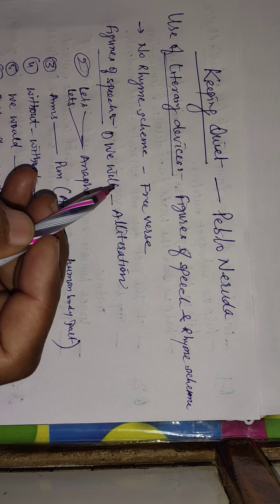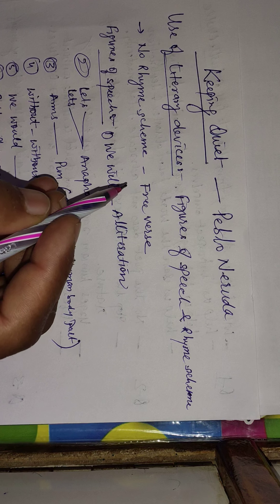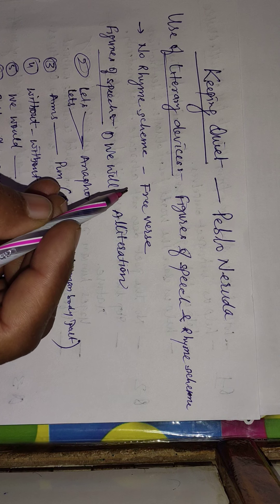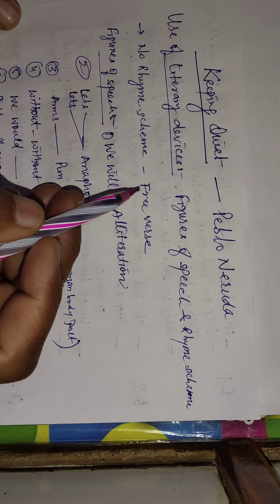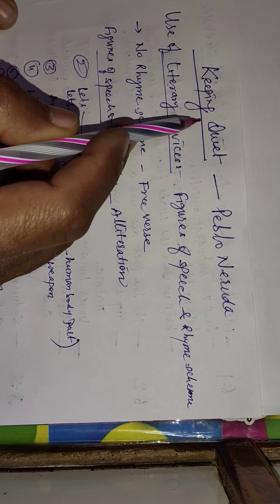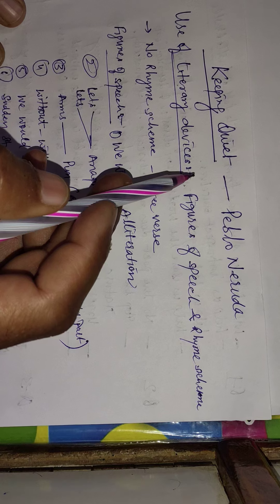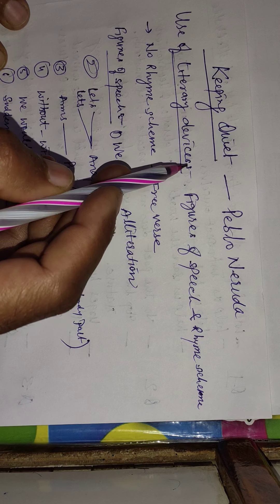It is time to discuss the literary devices used in this poem and the questions asked in the examination based on this poem. A stanza is provided in the examination and based on that stanza, four questions are asked. One is generally about the name of the poem and the poet, and one question is generally asked regarding the literary devices or figures of speech employed in that poem.